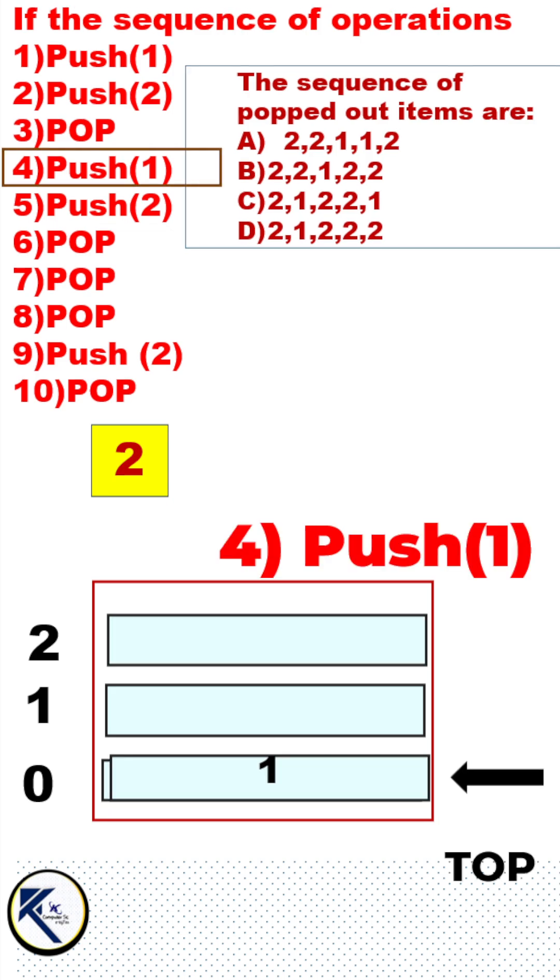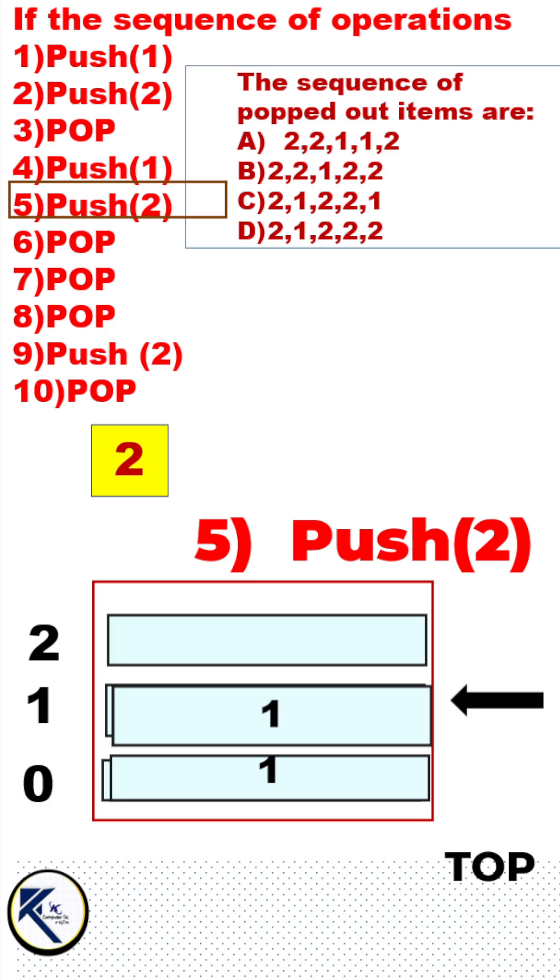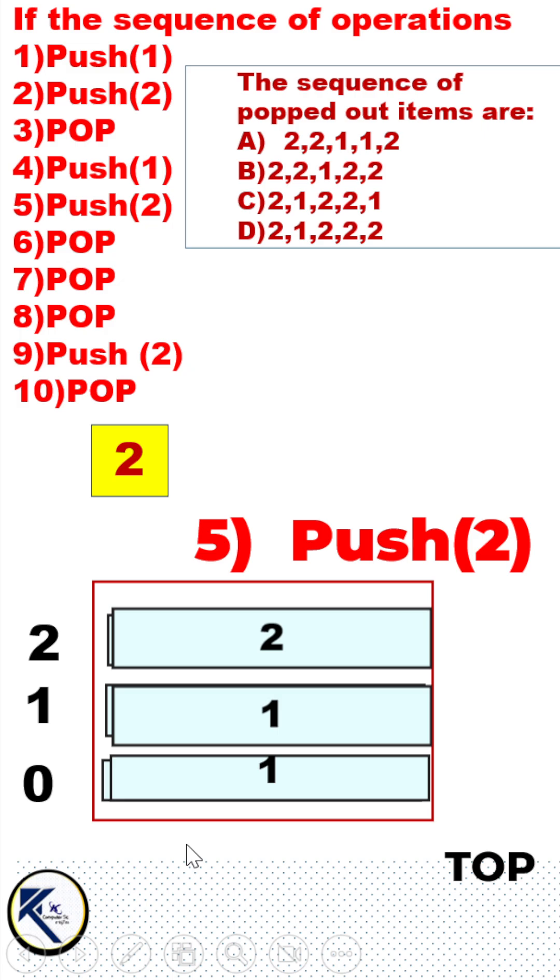Fourth operation is push. So increment and then push the new item. Fifth operation is again push. Remember at this stage, as per our given size of the stack, the stack is full. So if the next operation is also push, it will result in overflow.